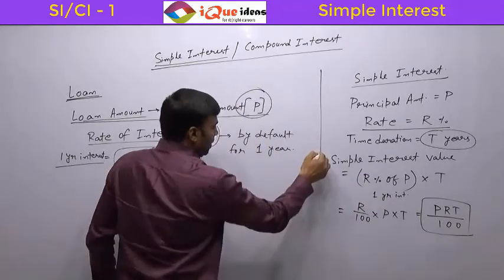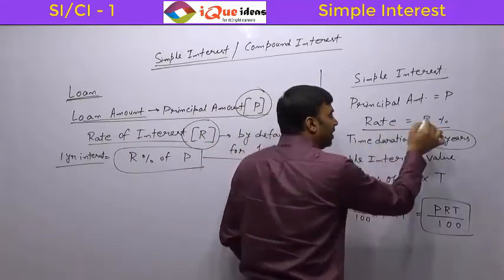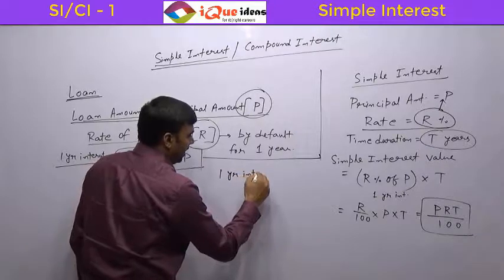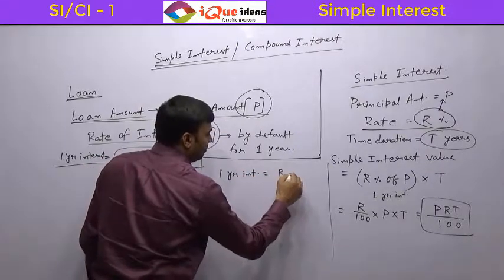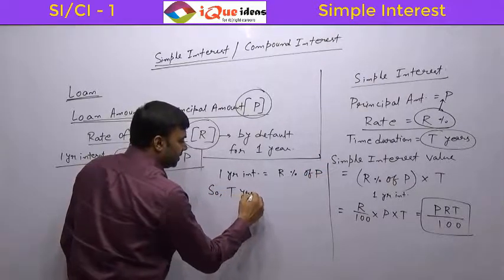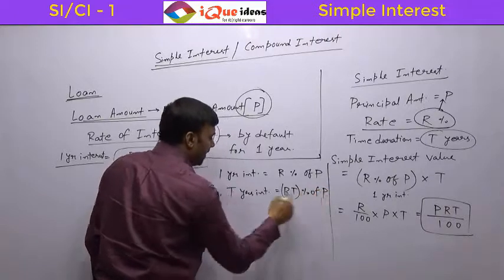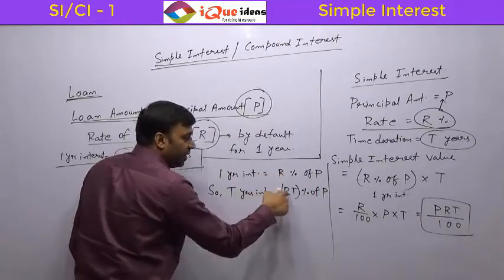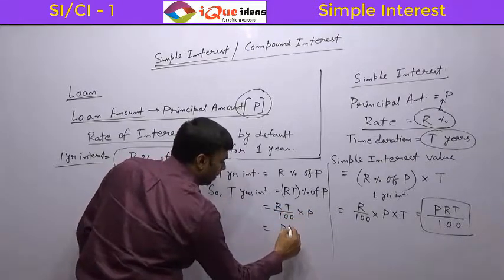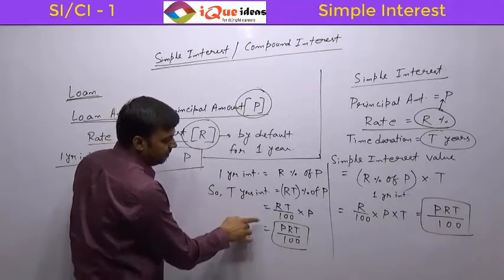There is one more way to understand this. In case of simple interest, the interest value every year remains the same, and in one year it is R percent of the principal amount. So one year interest equals R percent of P, and T years interest will be equal to RT percent of P, which is RT/100 × P, which also equals PRT upon 100.